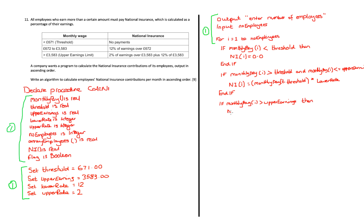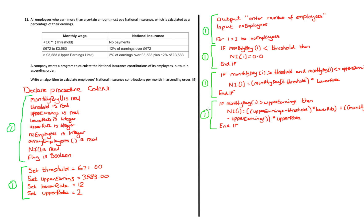For the third condition, if `monthly_pay[i]` is greater than upper earnings (3583 pounds), then `national_insurance[i]` equals `(upper_earnings - threshold) × lower_rate` plus `(monthly_pay[i] - upper_earnings) × upper_rate`. That's because the question states: anyone earning over 3583 pounds pays 2% on earnings above that, plus 12% of the band up to 3583 pounds. Each of those if statements earns one mark.